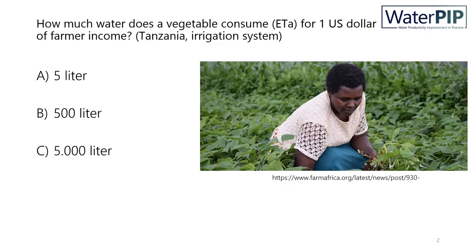Let us start with a short quiz. How much water do you think does an irrigated vegetable crop consume — actual evapotranspiration — to generate one US dollar of income for a farmer in Tanzania? Is that a) 5 liters, b) 500 liters, or c) 5,000 liters? The right answer is c) 5,000 liters.